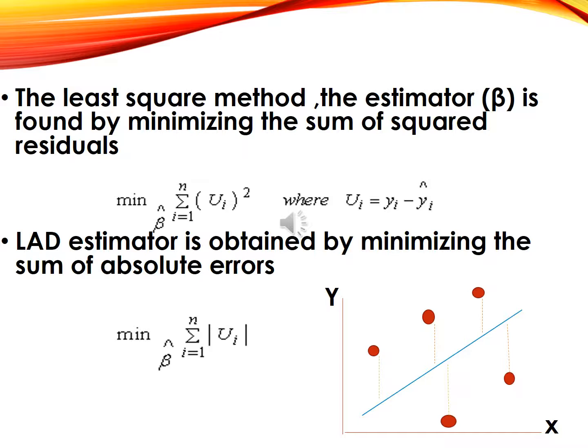In the ordinary least squares method, what we do is find the estimated beta by minimizing the sum of squared residuals. We take the difference between the actual observation and the linear regression line, and take the square of these residuals. We try to minimize the sum of squares. This is given by minimizing the sum of ui squared, where ui is yi minus yi-hat.